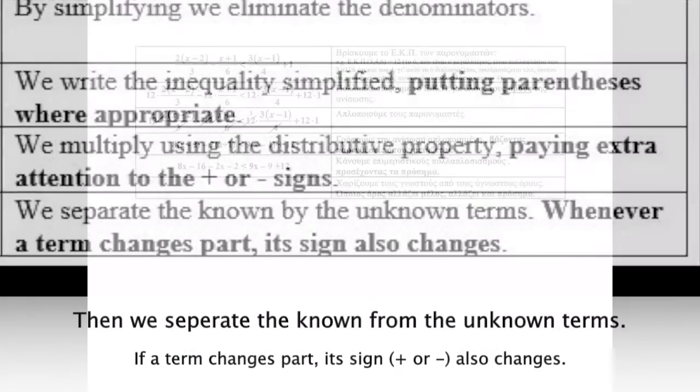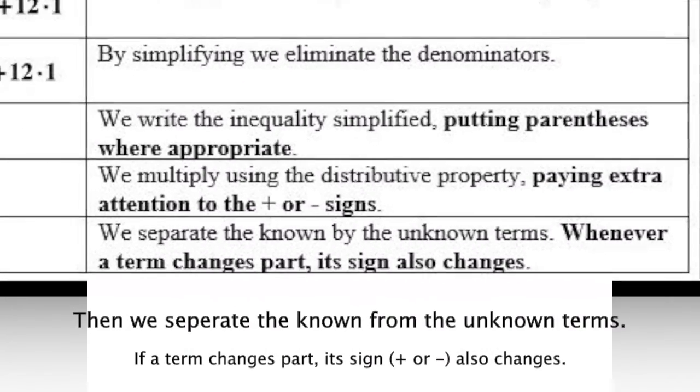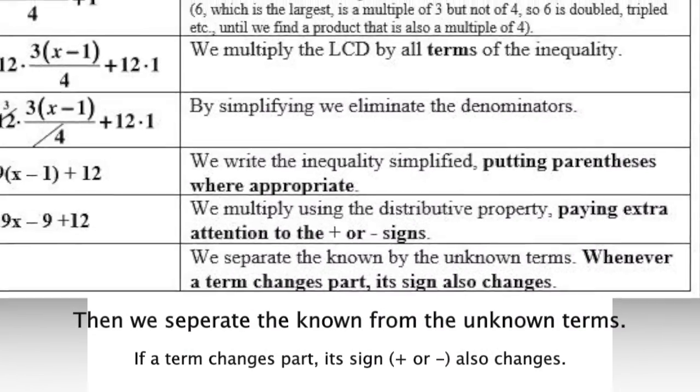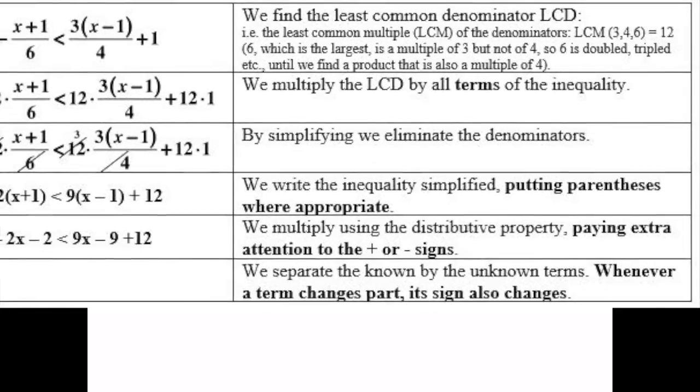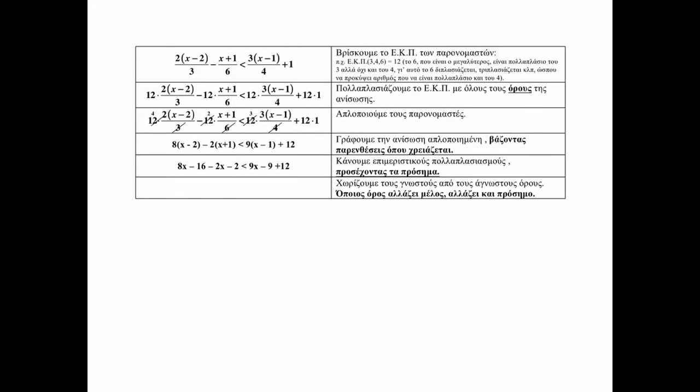Then, we separate the known from the unknown terms. Whenever a term changes part of the inequality, its sign also changes. First, unknown terms from left to right. 8x minus 2x and minus 9x: minus 2x remains the first part, so we copied them with the same sign.